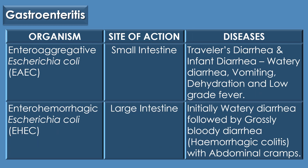The gastroenteritis caused by Enteroaggregative E. coli or EAEC mainly targets the small intestine and results in traveller's diarrhea and infant diarrhea, with the symptoms of watery diarrhea, vomiting, dehydration, and low-grade fever. The gastroenteritis caused by Enterohemorrhagic E. coli or EHEC targets the large intestine and results initially in watery diarrhea, followed by grossly bloody diarrhea or hemorrhagic colitis with abdominal cramps.